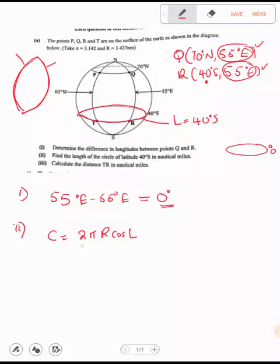Now, we can go and punch there. So this will be 2 times pi is 3.142, radius is 3437 nautical miles times cos 40 degrees. So we can just punch that on the calculator.